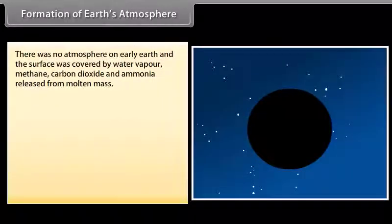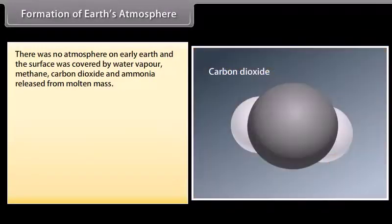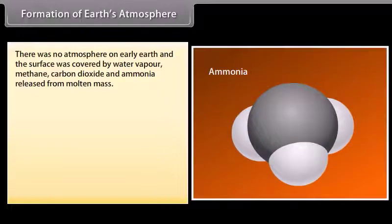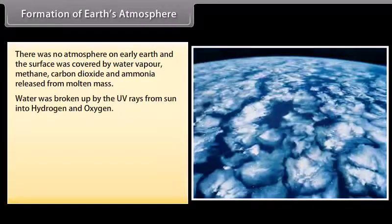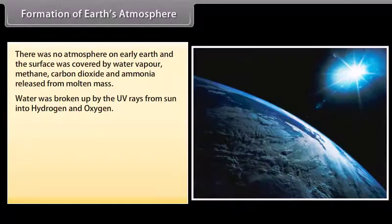Formation of Earth's atmosphere. There was no atmosphere on early Earth. The surface of Earth was covered by water vapor, methane, carbon dioxide and ammonia released from molten mass. Water was broken up by the UV rays from sun into hydrogen and oxygen.